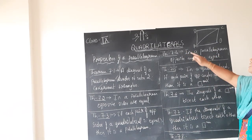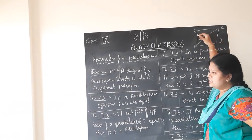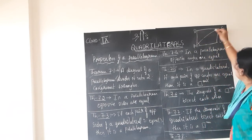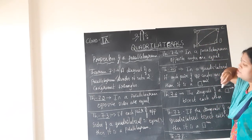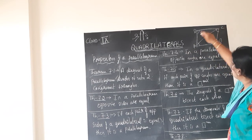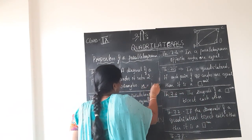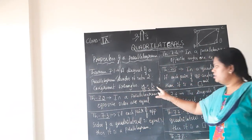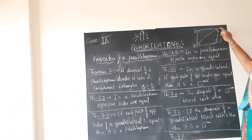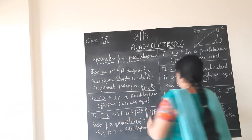Theorem 7.4 states that in a parallelogram, opposite angles are equal. I already explained what adjacent angles and opposite angles are. Angle A and angle C are opposite angles; angle B and angle D are opposite angles. So in a parallelogram, angle A equals angle C and angle B equals angle D — that is, the opposite angles of a parallelogram are equal.